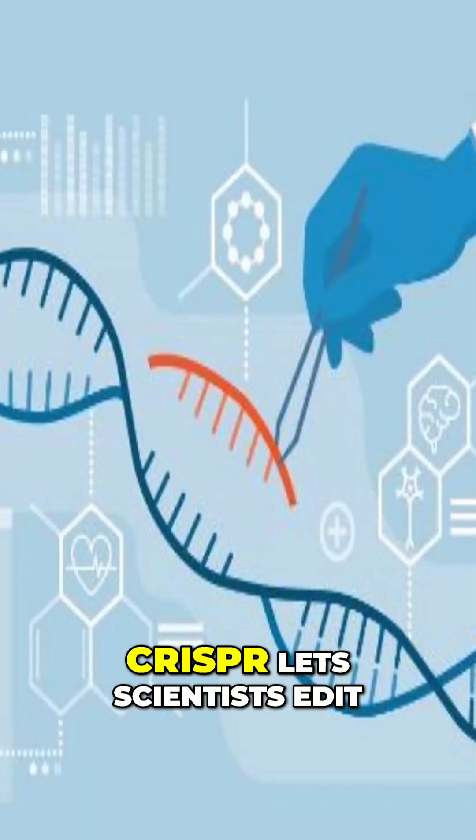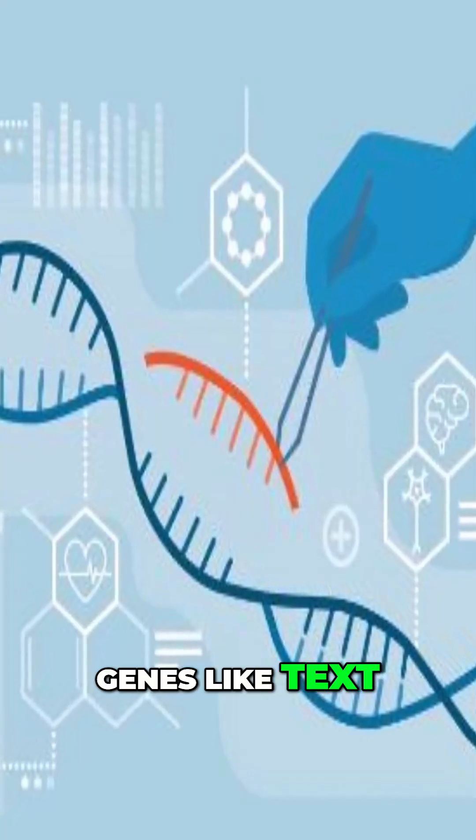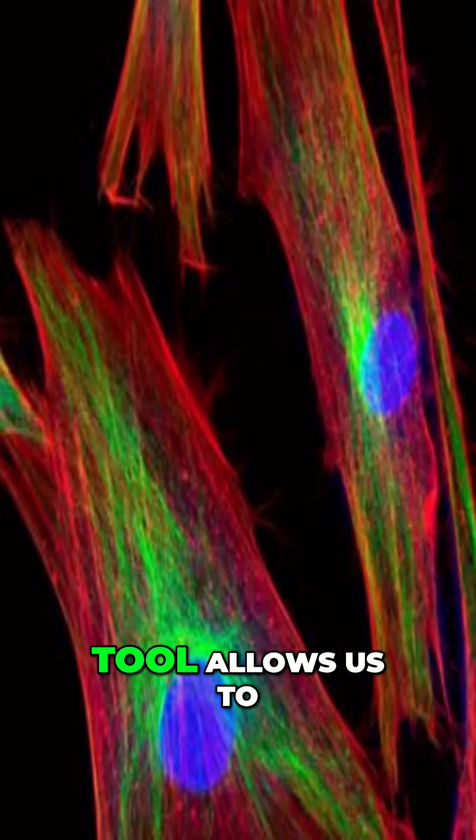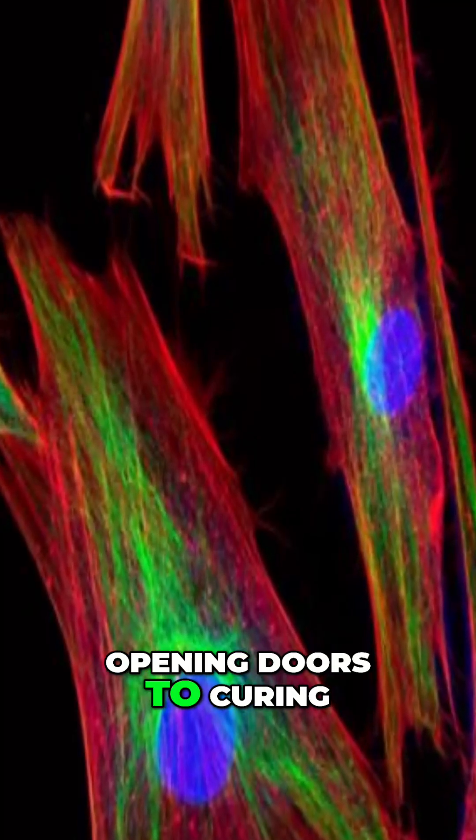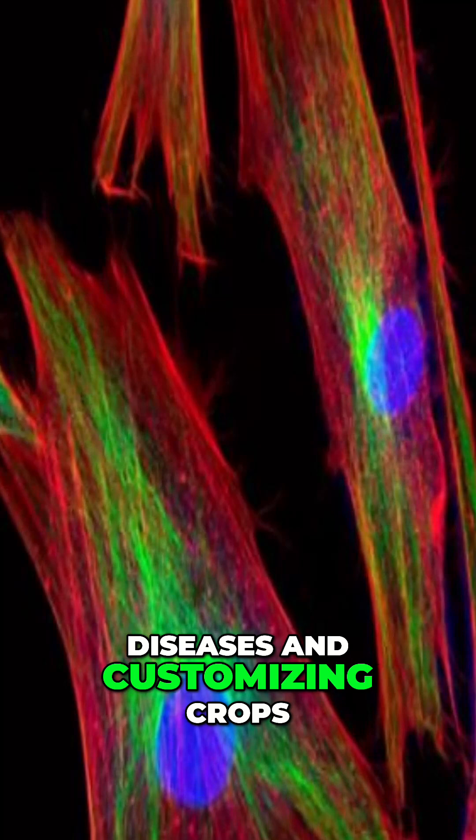1. CRISPR lets scientists edit genes like text. This breakthrough gene editing tool allows us to fix DNA mutations, opening doors to curing diseases and customizing crops.